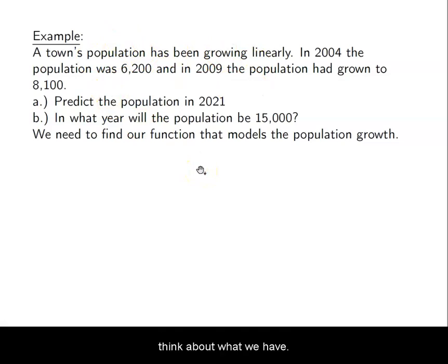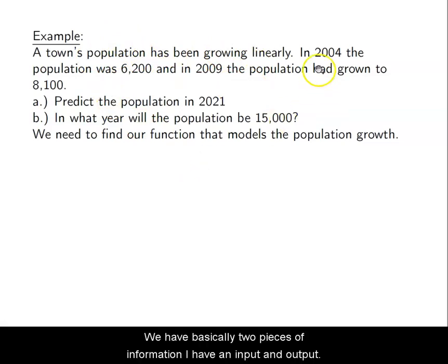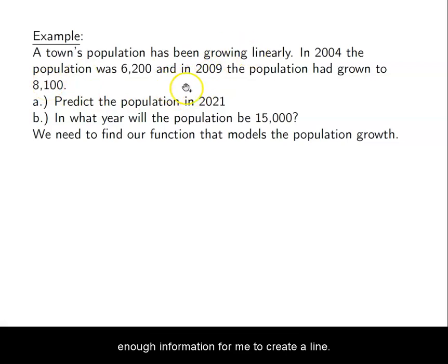So I need to use the information. Let's think about what we have. We have basically two pieces of information. I have an input and output and a second set of input and outputs. So I have enough information for me to create a line. 2004 as an input, output is 6,200. 2009 as an input, output is 8,100.